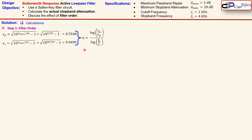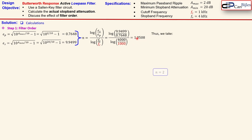and using the formula for the low-pass Butterworth response — which contains epsilon_s, epsilon_p, the stopband frequency, and the cutoff frequency — substituting the values gives approximately 1.85. Since we need an integer value, a first-order filter is not sufficient, so we go to second order, meaning n = 2.